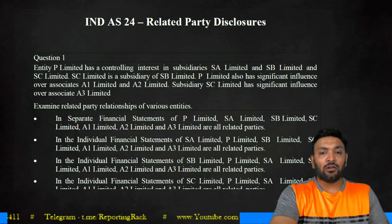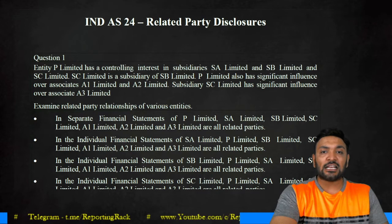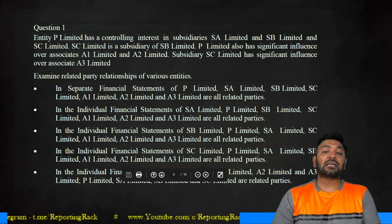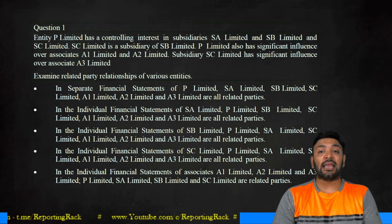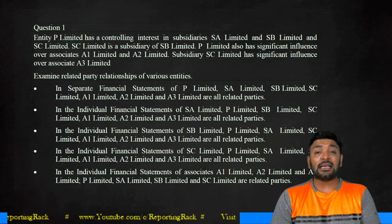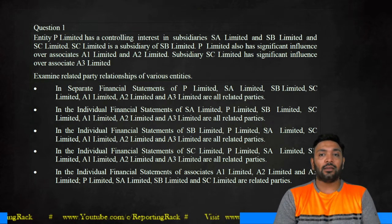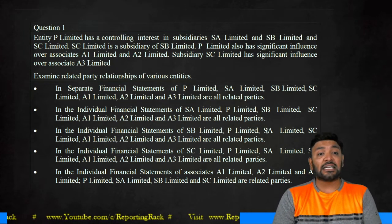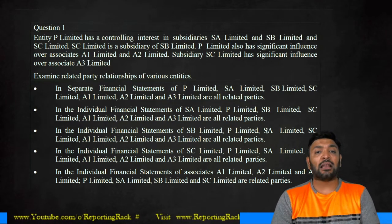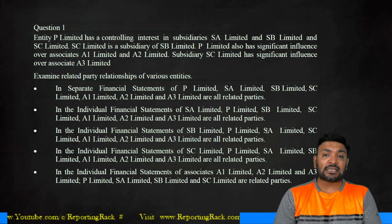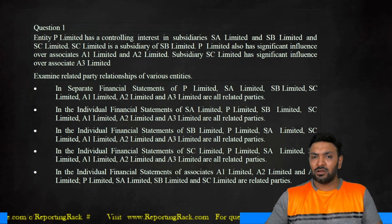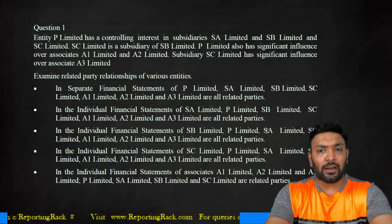Let's look at questions on India AS 24 related party disclosures. Entity P has a controlling interest over subsidiaries SA, SB, and SC. SC is a subsidiary of SB. P Limited has significant influence over its associates A1 and A2, and SC has another associate which is A3. Let us try to put this up in a particular way.